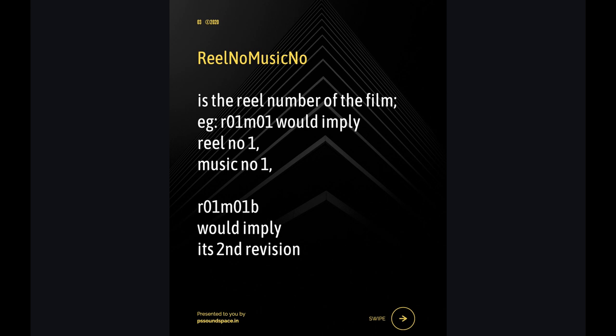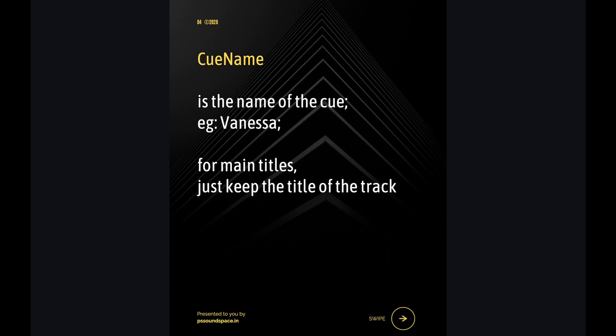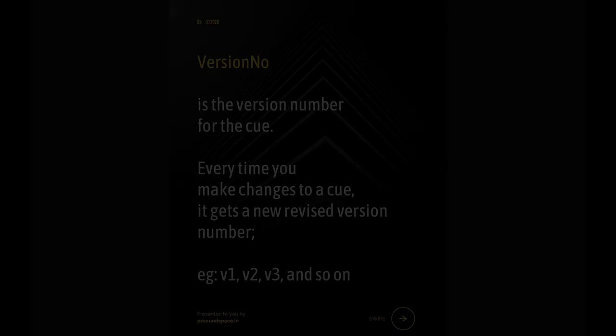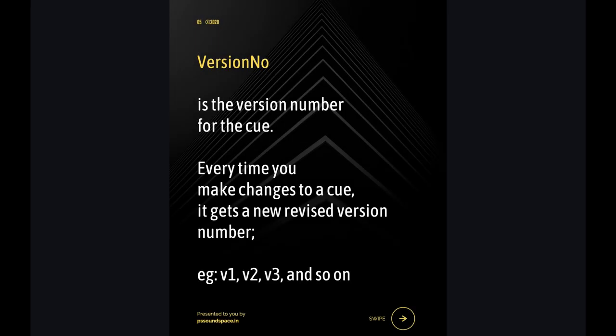R01M01B would imply its second revision. Cue Name: it is the name of the cue or the title. Example: Vanessa. For main titles, just keep the title of the track. Version Number — example: V1, V2, V3 and so on.